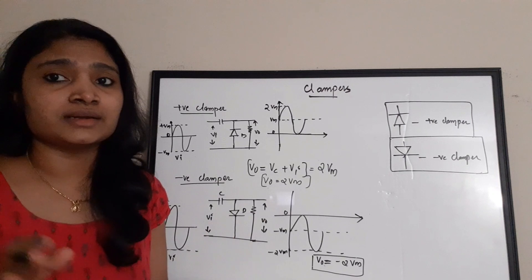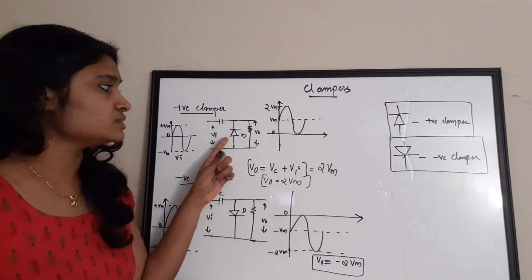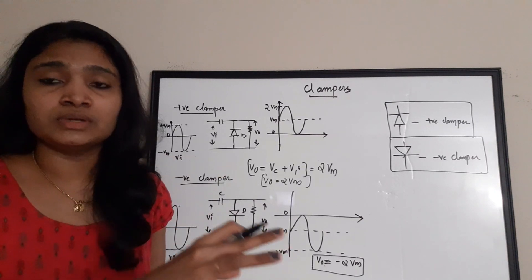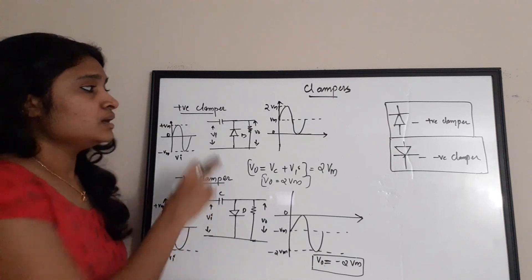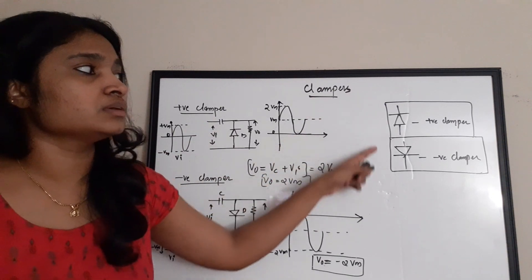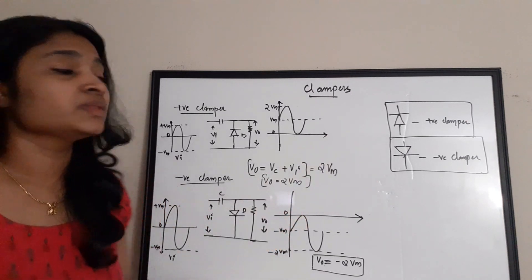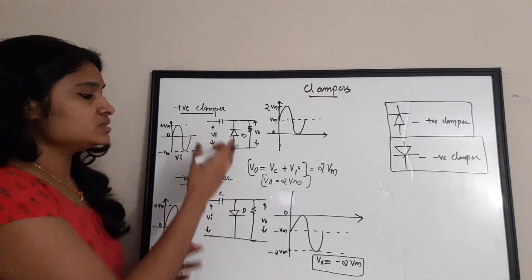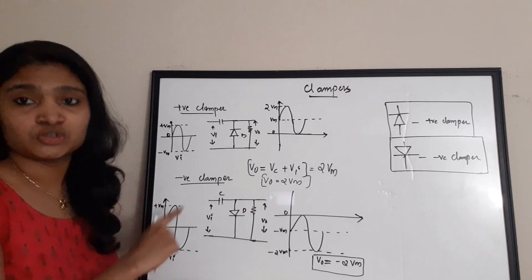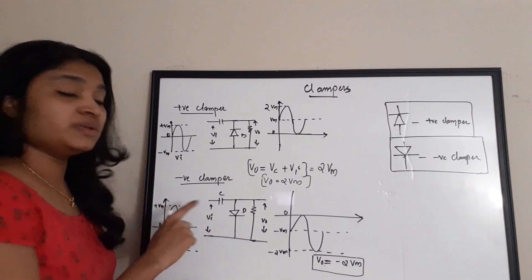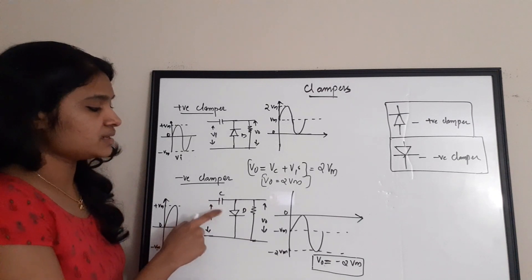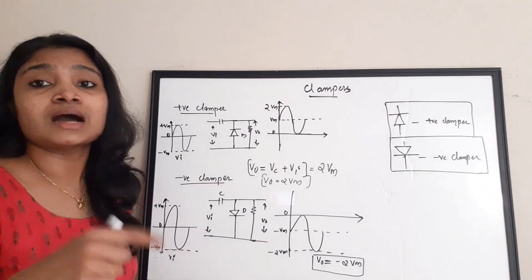In a positive clamper circuit the diode is connected upwards; in a negative clamper circuit the diode is connected downwards. If you are given a circuit with a diode, capacitor, and resistor, it is a clamper — check the diode direction to determine positive or negative. For the negative clamper, the same sine wave input (+Vm to -Vm) is applied, and the diode is connected downward.